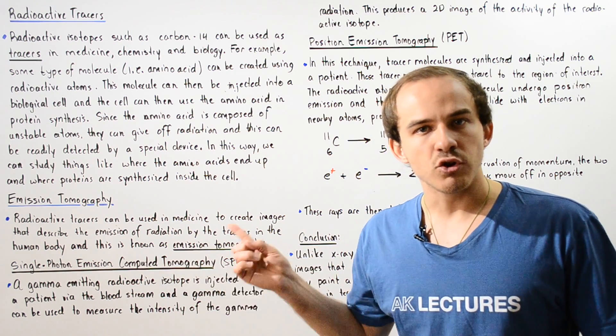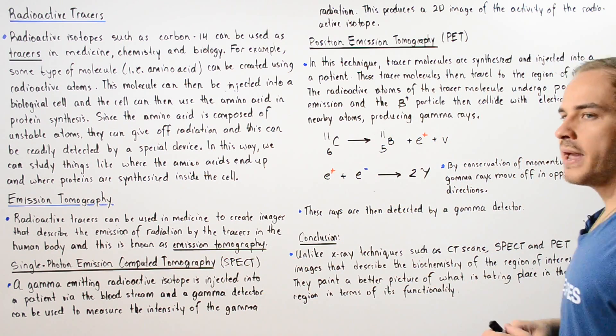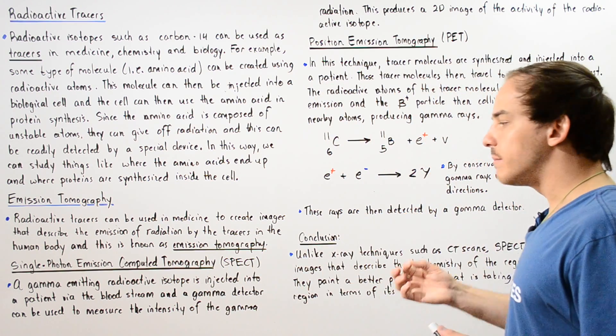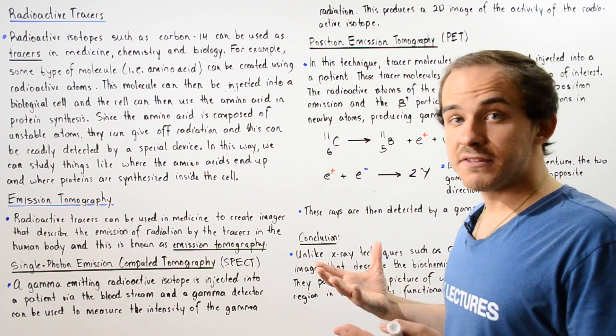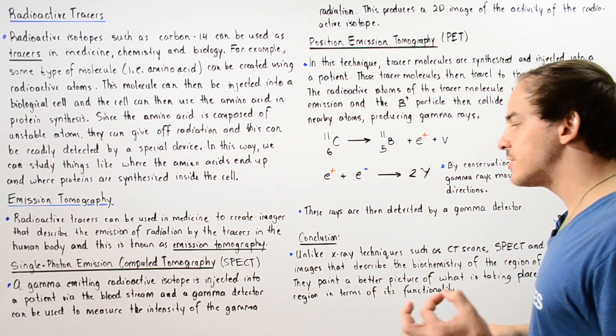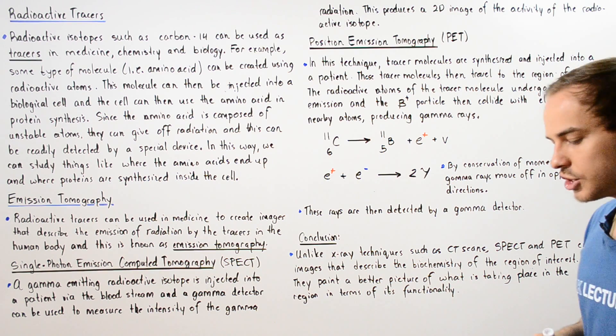Within SPECT, a gamma-emitting radioactive tracer is injected into a patient via the bloodstream. A gamma detector, some type of device that is able to detect gamma radiation, can be used to measure the intensity of emitted gamma radiation.